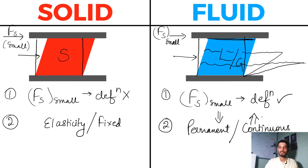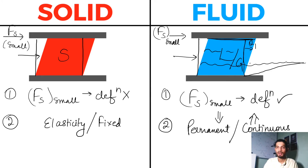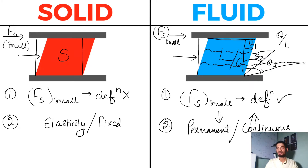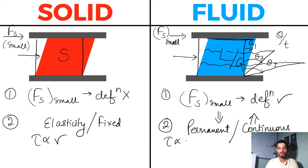Now from here one thing is clear: if this deformation is continuous, what we are seeing is a change in the angle theta — which represents deformation — with respect to time. Suppose in time t1 I have angle theta1 from the normal plane, then it deforms so that theta1 becomes theta2, then theta3. So we are seeing change in angle with respect to time. Therefore, in solid we take shear stress proportional to shear strain, but in fluid we take shear stress proportional to the rate of deformation, because the deformation is changing with time.